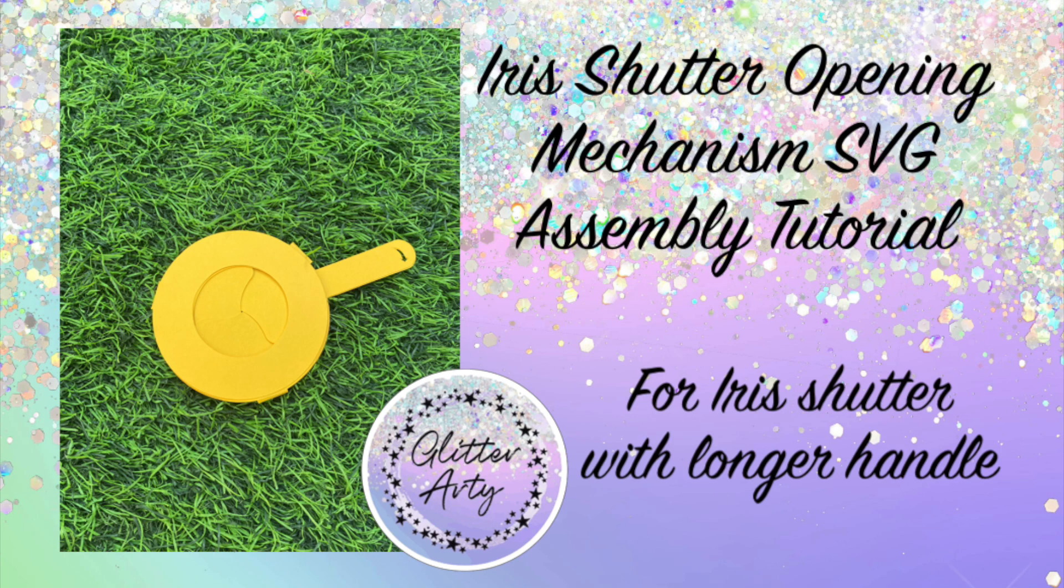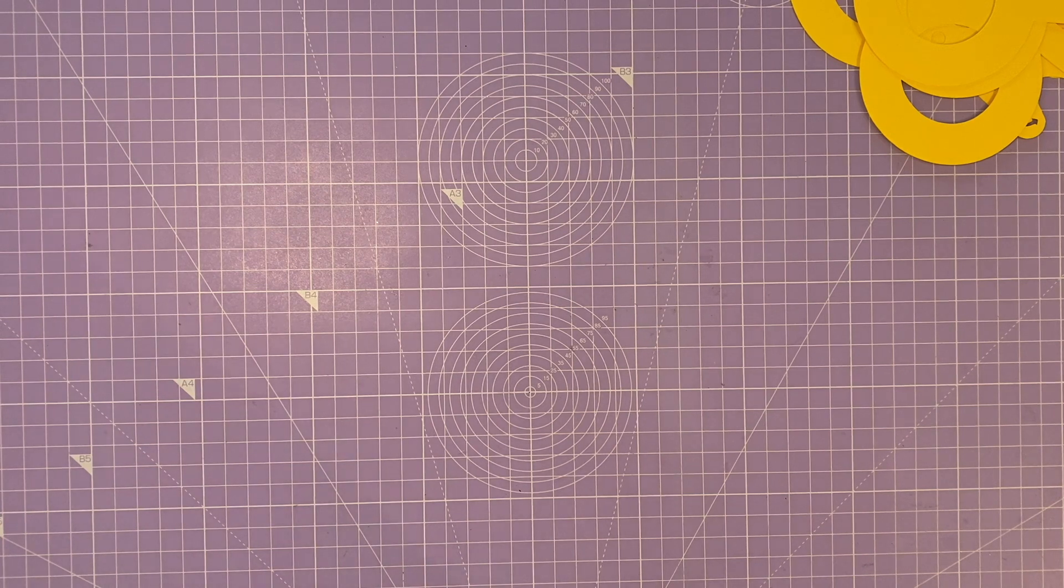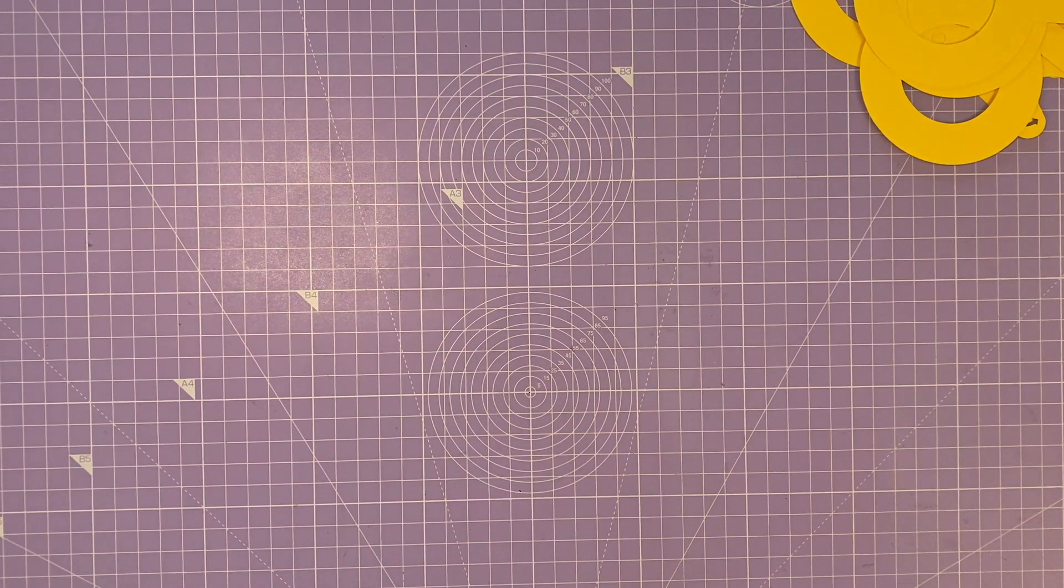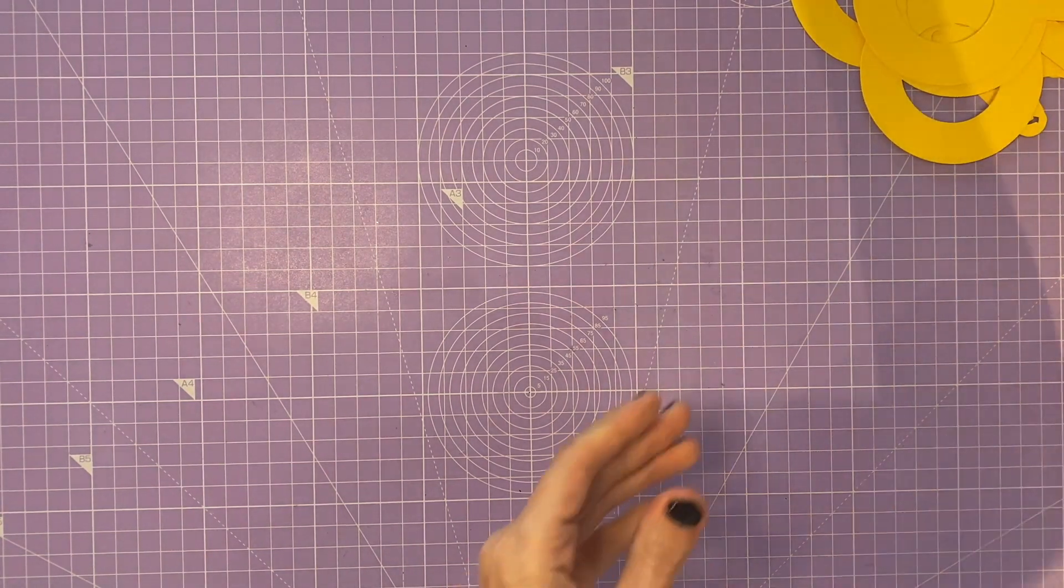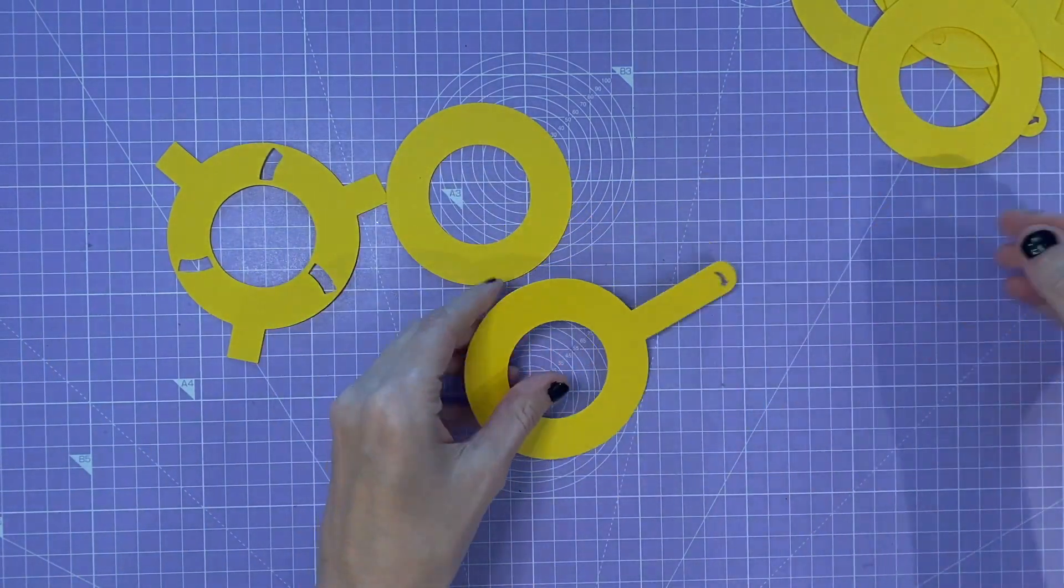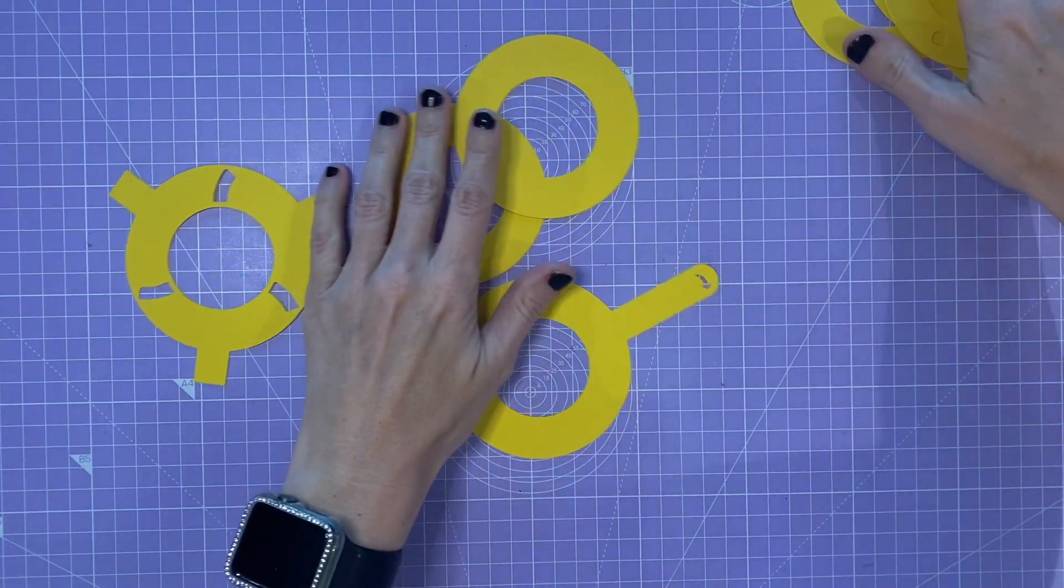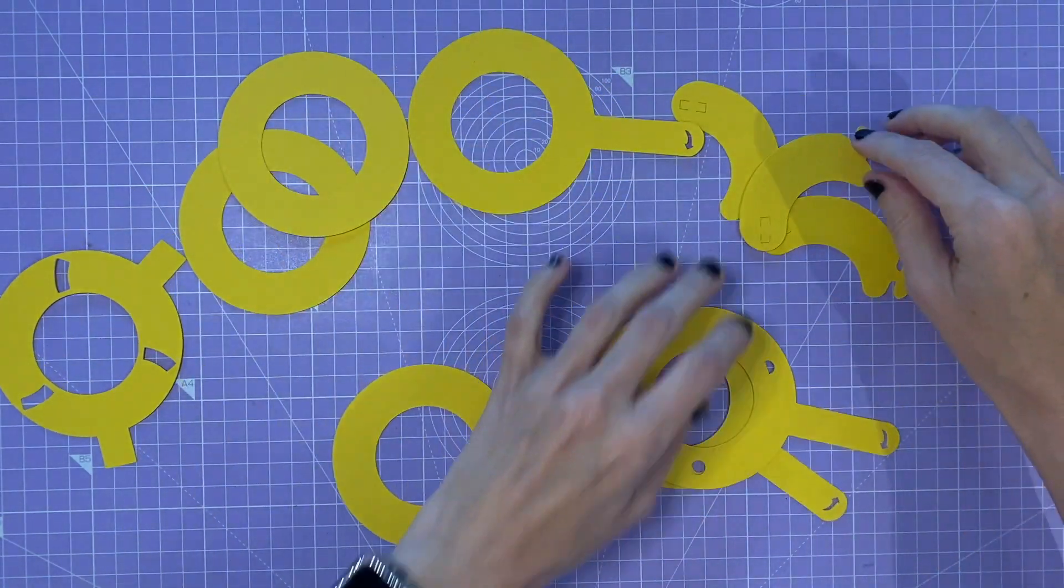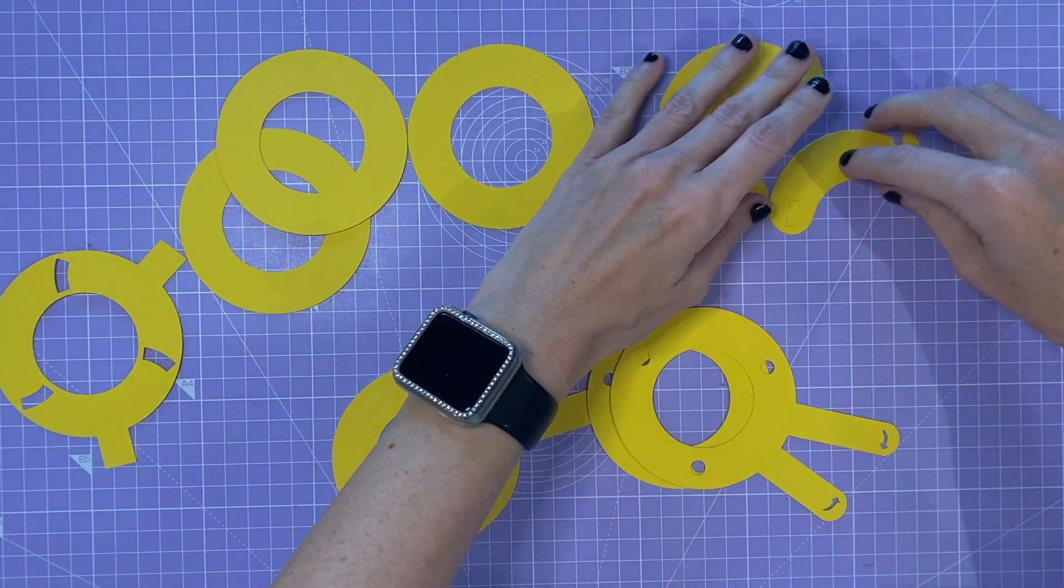Hi everyone, this is Corrie. Today I'm going to show you how to put the iris shutter together. This is a slightly different video than my other iris shutter. I have one which has a short handle, this one has the longer handle and it's just got one extra step really. It's not that difficult compared to the other one, but I just thought it was worth showing you.